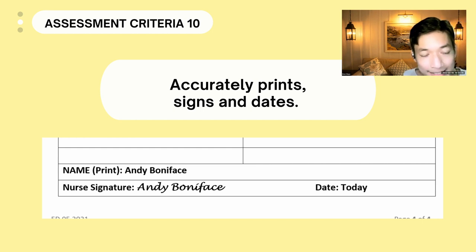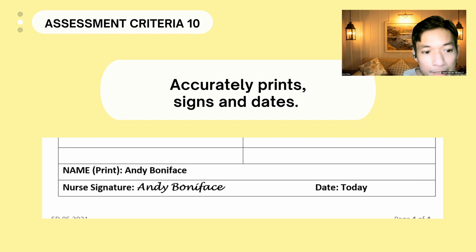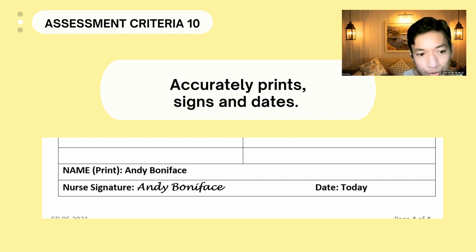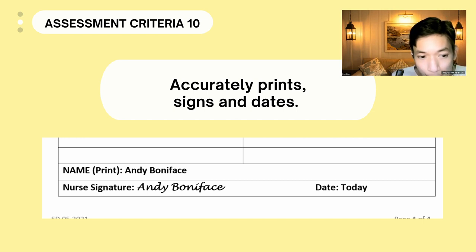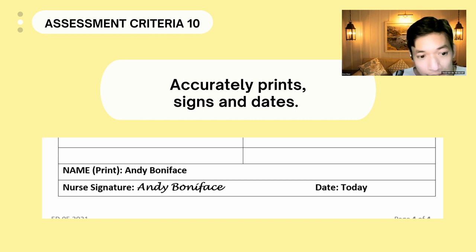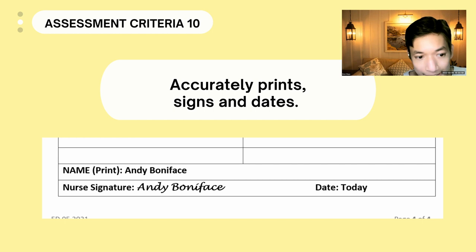Criteria number ten: accurately print, sign, and date your care plan. One of the major reasons candidates fail this station is forgetting to write their name — probably one of the most heartbreaking reasons for failing. Once you receive your papers, go to the second page and immediately write your name, signature, and date. Writing the word 'today' is acceptable as a date. On the examination, all dates are written as 'today.'